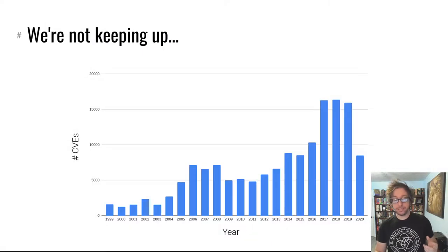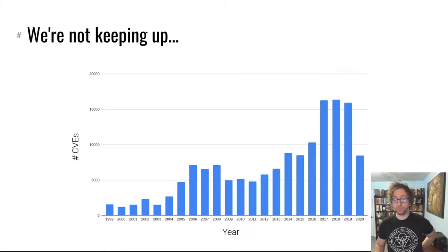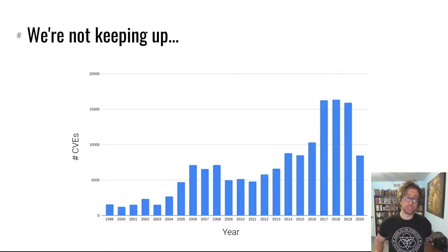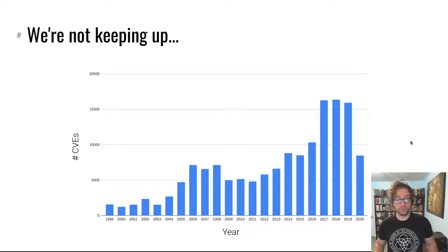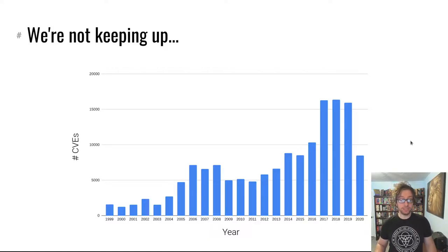The bottom line is we're not keeping up. This is a graph of the number of CVEs — Common Vulnerability Enumeration — a trophy that is given to security researchers that identify and report security vulnerabilities over time. And you can clearly see a gigantic increase in the number of CVEs granted, where nowadays we're getting at least twice as many CVEs as we did at the height of the early 2000s.